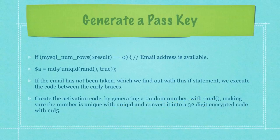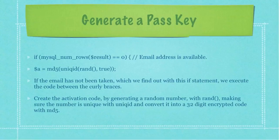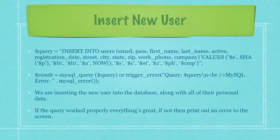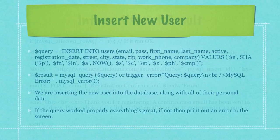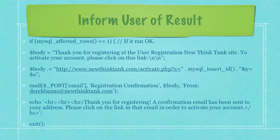We create the activation code by generating a random number with rand, making sure the number is unique with uniqid, and converting it into a 32-digit encrypted code with md5. We are inserting the new user into the database along with all their personal information here. If the query worked properly, everything's great. If not, then we print out an error to the screen. And here we're informing the user of the result of that query.